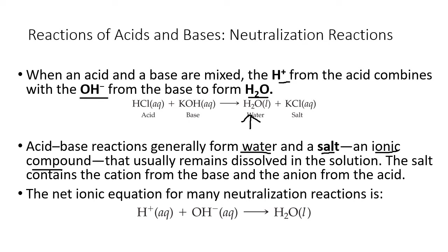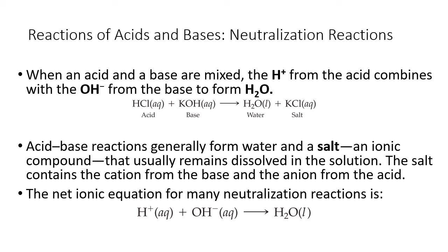A net ionic equation simply means these are the ions that are actually doing something. The other ions present are called spectator ions. For example, Cl⁻ and K⁺ are moving around to make KCl, but they're not the key focus of the reaction — KCl is technically still floating around as ions in solution and didn't really make anything. So neutralization reactions involve an acid and a base producing water and a salt.